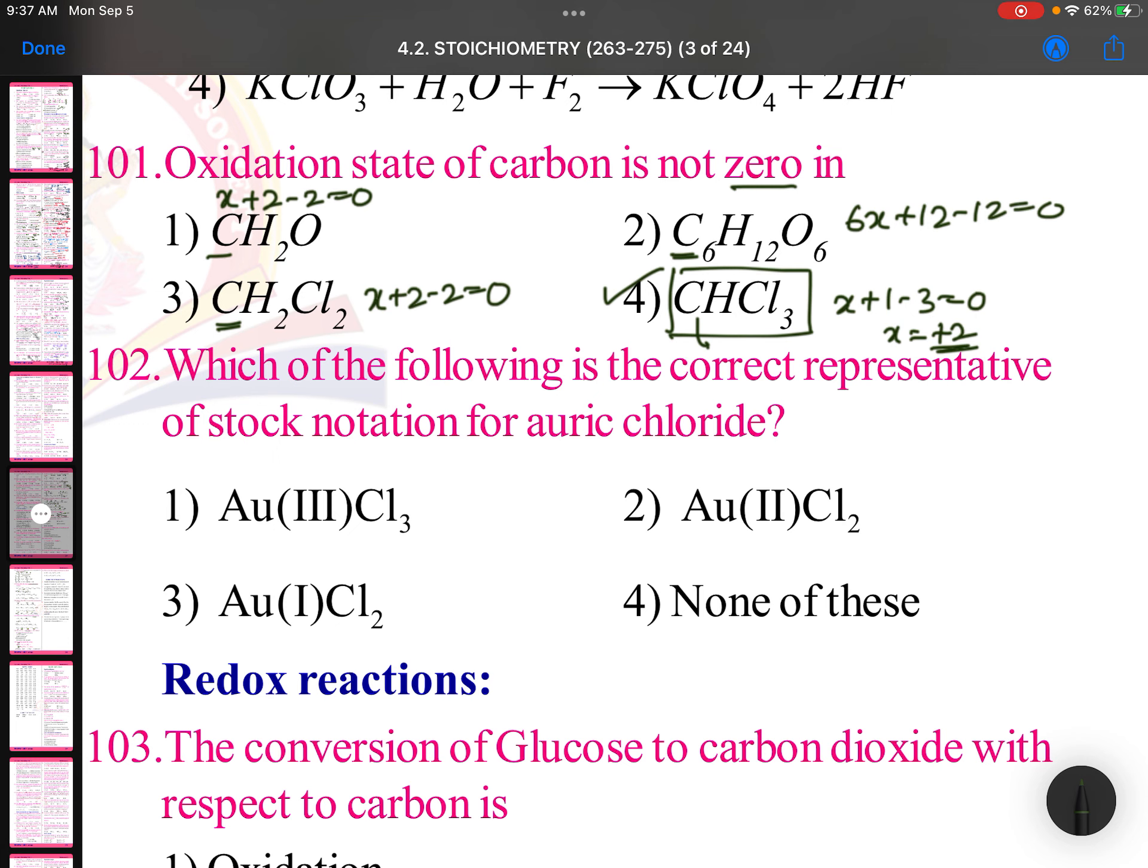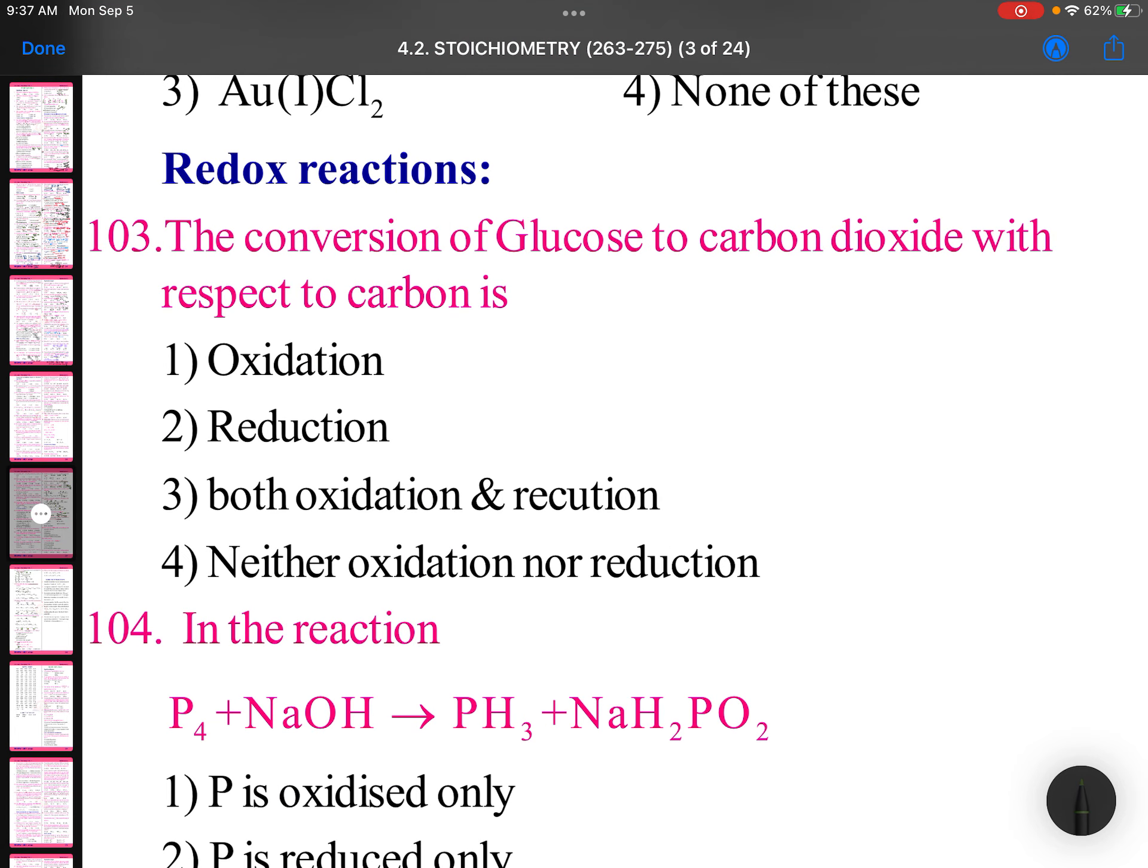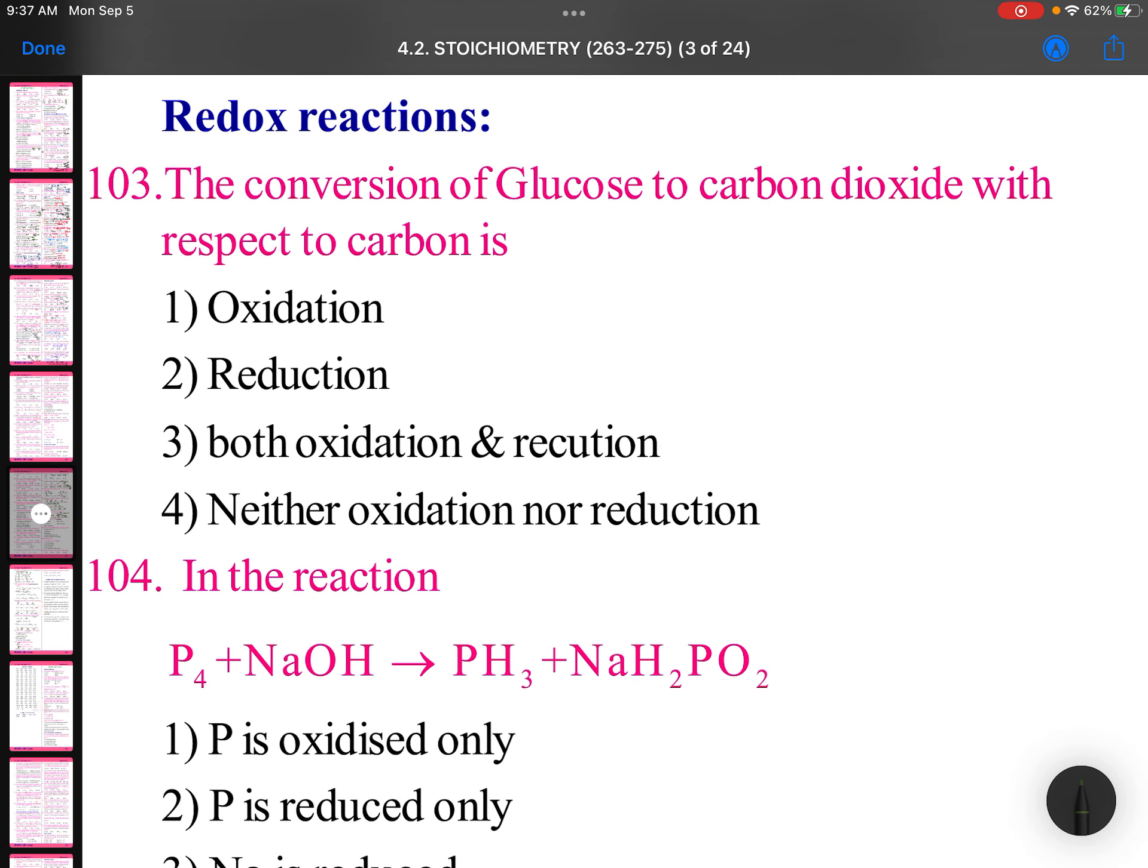Which of the following is the correct representation notation of auric chloride. Auric chloride means Au3+. The conversion of glucose to carbon dioxide with respect to carbon: glucose C6H12O6, oxidation state of carbon is zero. Just now we have seen. Carbon dioxide is CO2 where oxidation state is plus 4. Zero to plus 4 increase in oxidation state is oxidation.